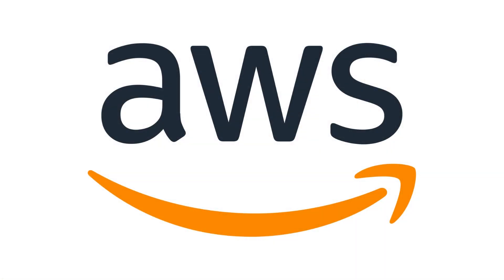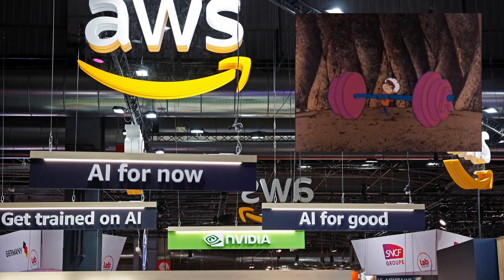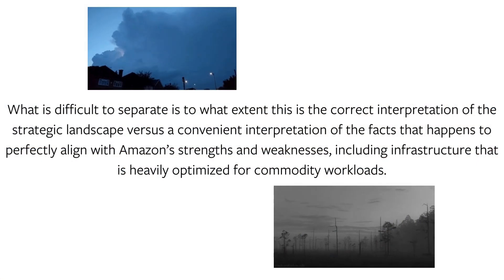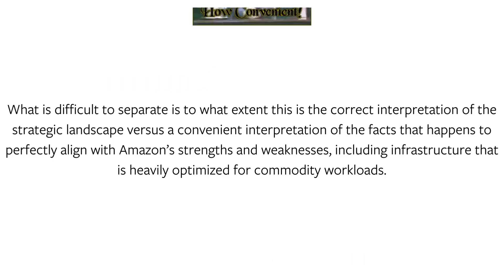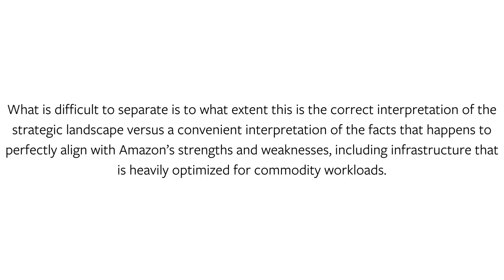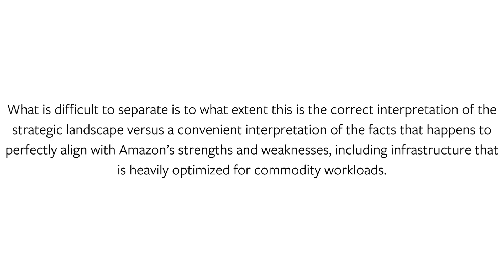AWS. Amazon is certainly hoping that argument is correct. The company is operating as if everything in the AI value chain is modular and ultimately a commodity, which insinuates that it believes data gravity will matter most. What is difficult to separate is to what extent this is the correct interpretation of the strategic landscape versus a convenient interpretation of the facts that happens to perfectly align with Amazon's strengths and weaknesses, including infrastructure that is heavily optimized for commodity workloads.